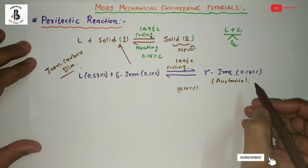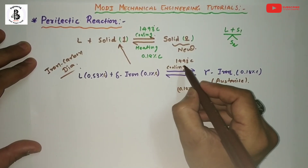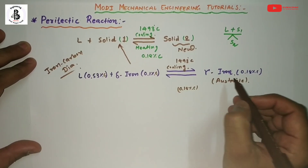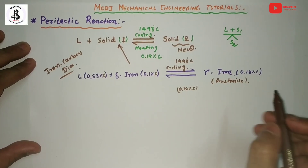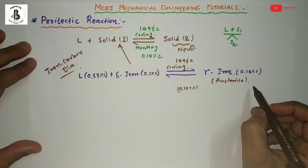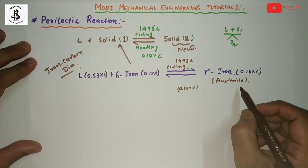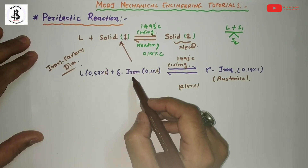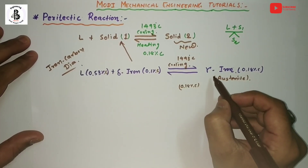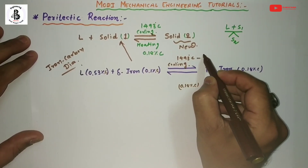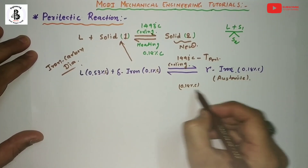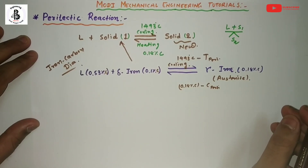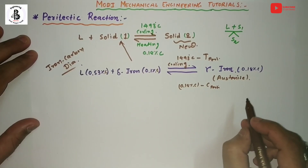Austenite phase forms at higher temperatures, just below 1493 degrees centigrade, and is a soft phase in the iron-carbon diagram. The delta iron at 0.18% solidifies into the new solid. This temperature is known as the peritectic temperature, and this composition is known as the peritectic composition. Now we will see the phase transformations at peritectic reactions with respect to the iron-carbon diagram.